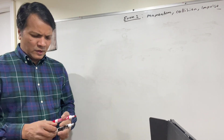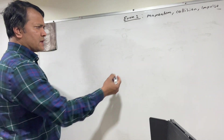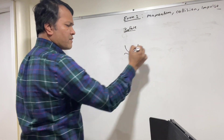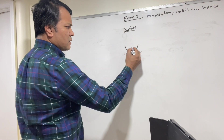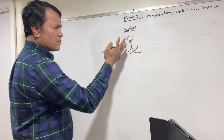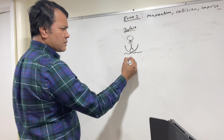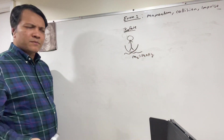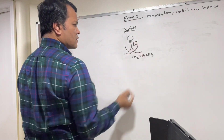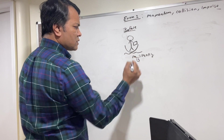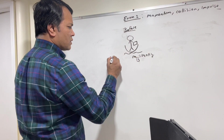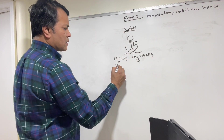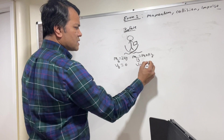One of the problems I gave you: you are in the middle of the river, inside a boat. The boat and you together have a mass of 140 kg, and you have been reading a book. The mass of the book is 2 kg. The velocity of the book is 0 and velocity of the boat is also 0.